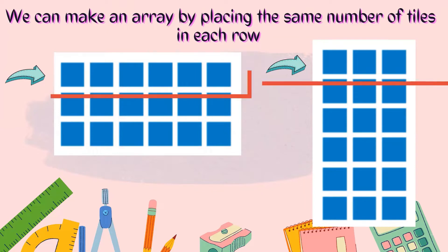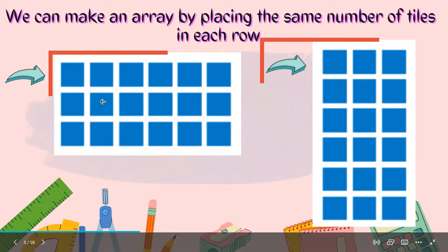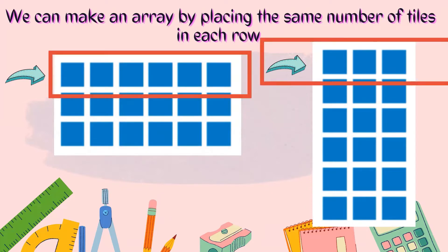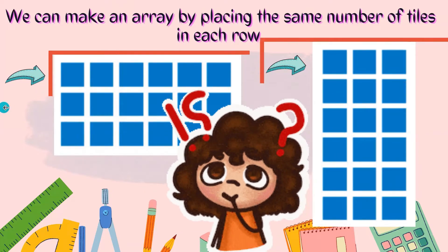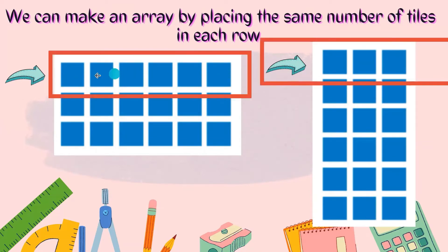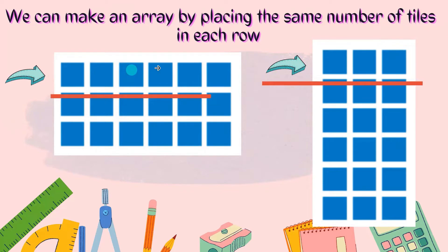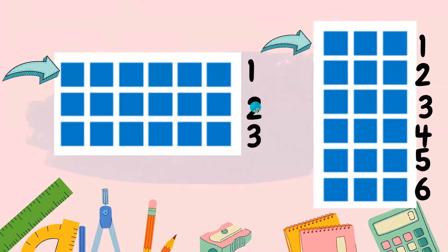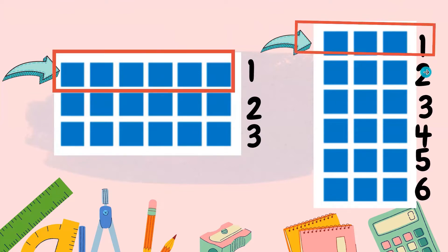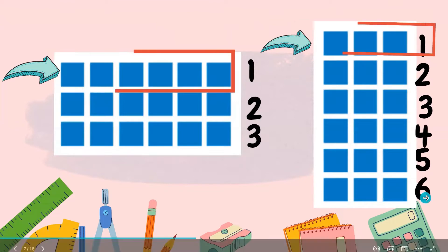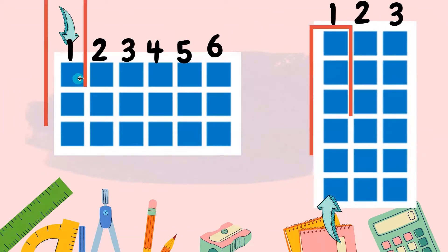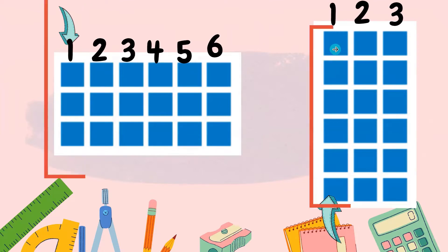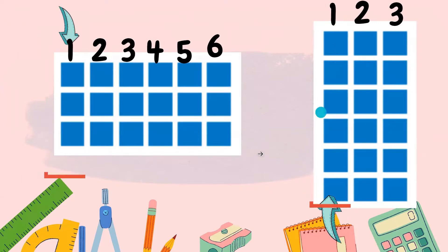That's a good question and we're going to explore that. Let's analyze the array. We can make an array by placing the same amount of tiles in each row. A row goes from left to right. The first array has three rows. The second array has six rows. The first array has six tiles in each row, and the second array has three tiles in each row.